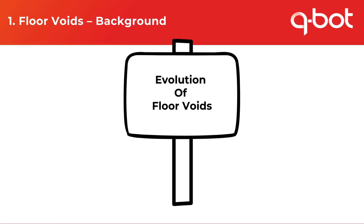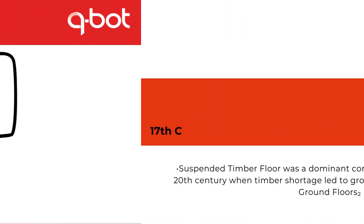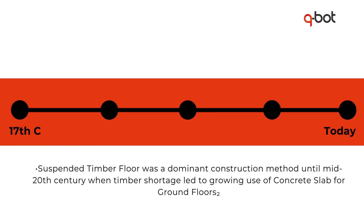They provided fresh air for interior combustion and enabled moisture within the walls to evaporate internally and dissipate out. Suspended timber floor was the dominant construction method up until the mid-20th century, when a timber shortage led to growing use of concrete slab for ground floors.